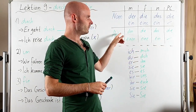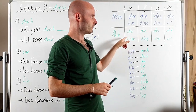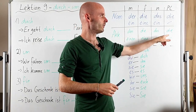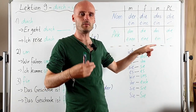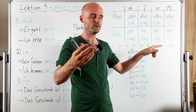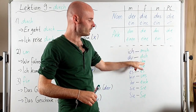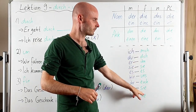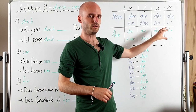After a preposition always comes an object, and that object has to be accusative. This can either be an article, a possessive article like 'my' or 'your,' or a personal pronoun — but it has to be accusative.